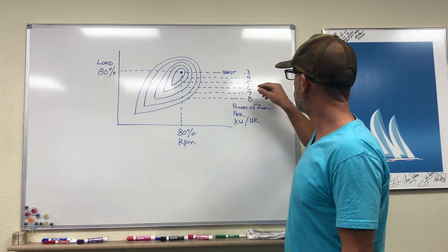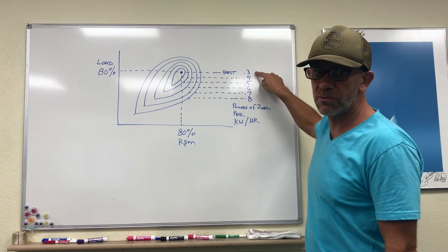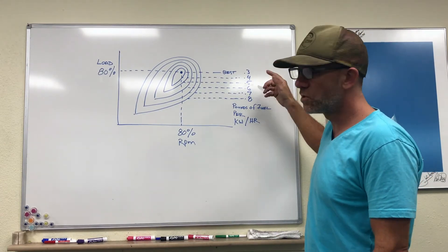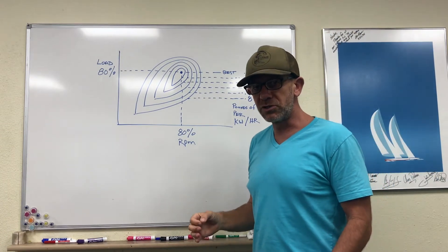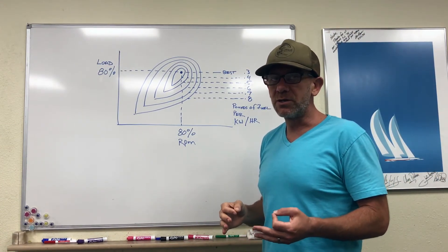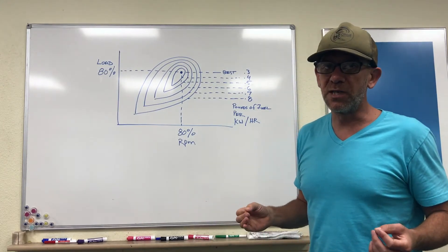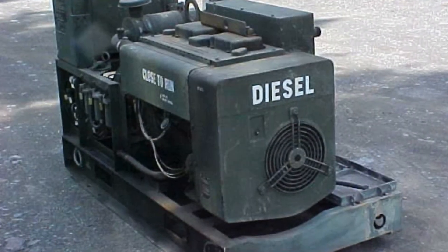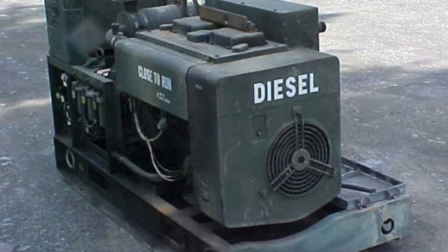As you move away, you go from burning 0.3 pounds to 0.4 to 0.5 and so on. And what that shows is with a poorly loaded generator, you're not going to get nearly as good of efficiency, all the way to the scenario where you don't have any load whatsoever.